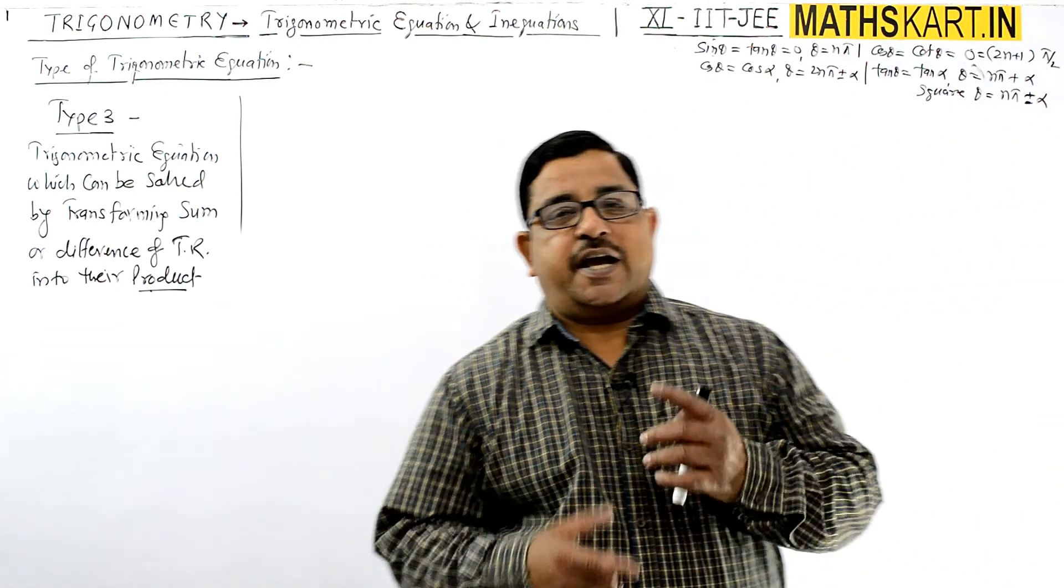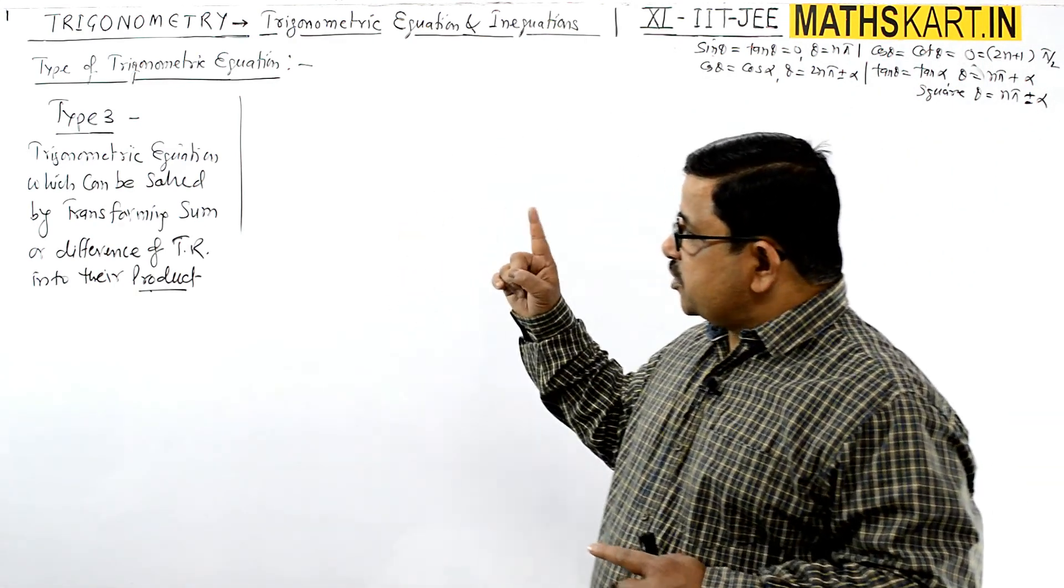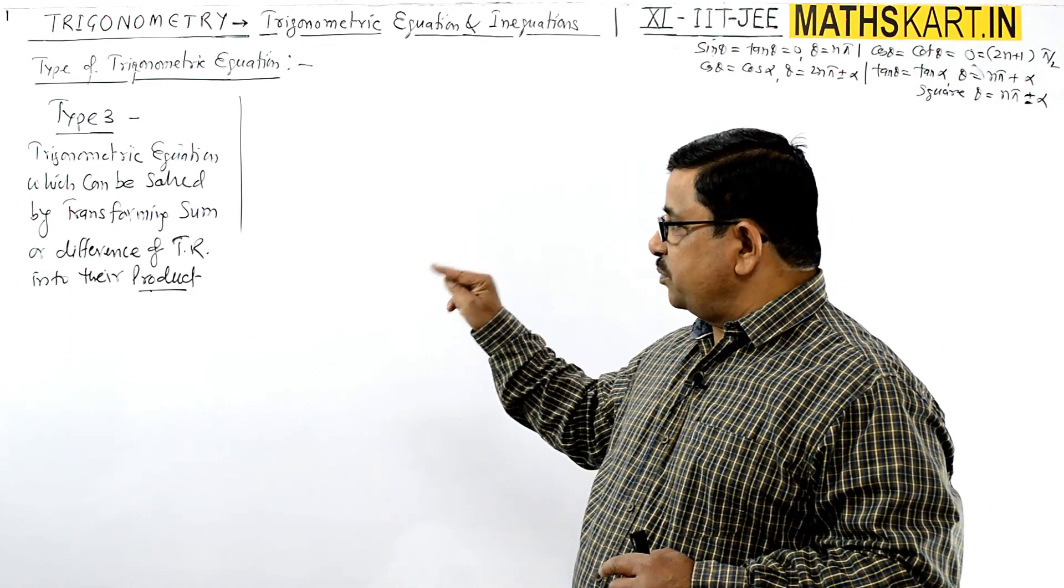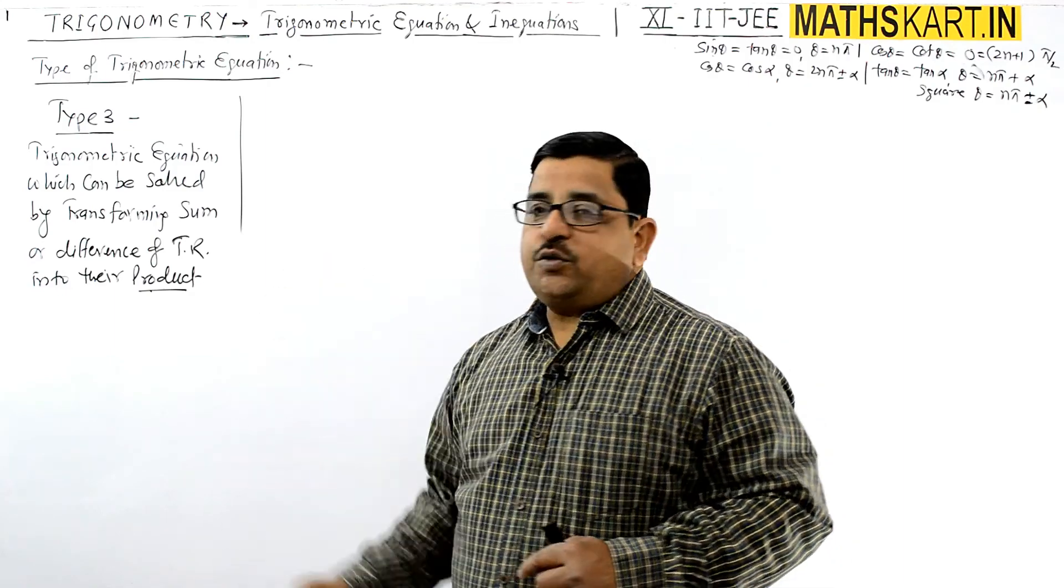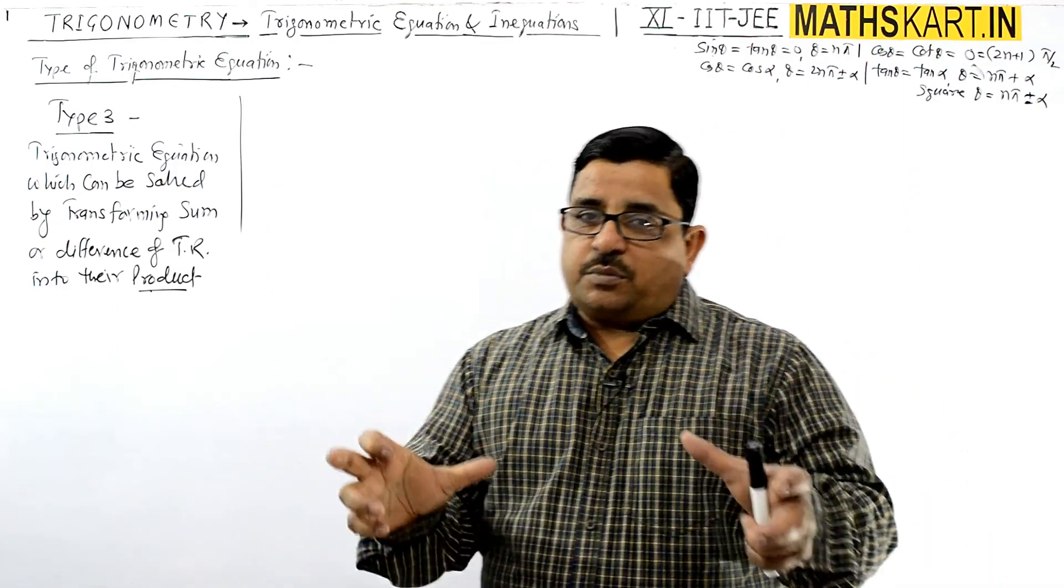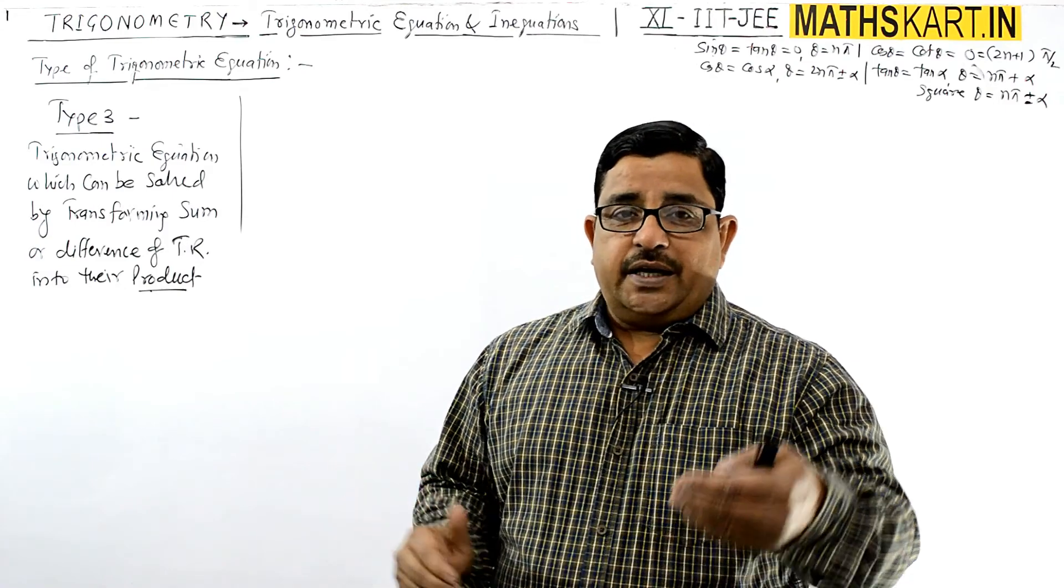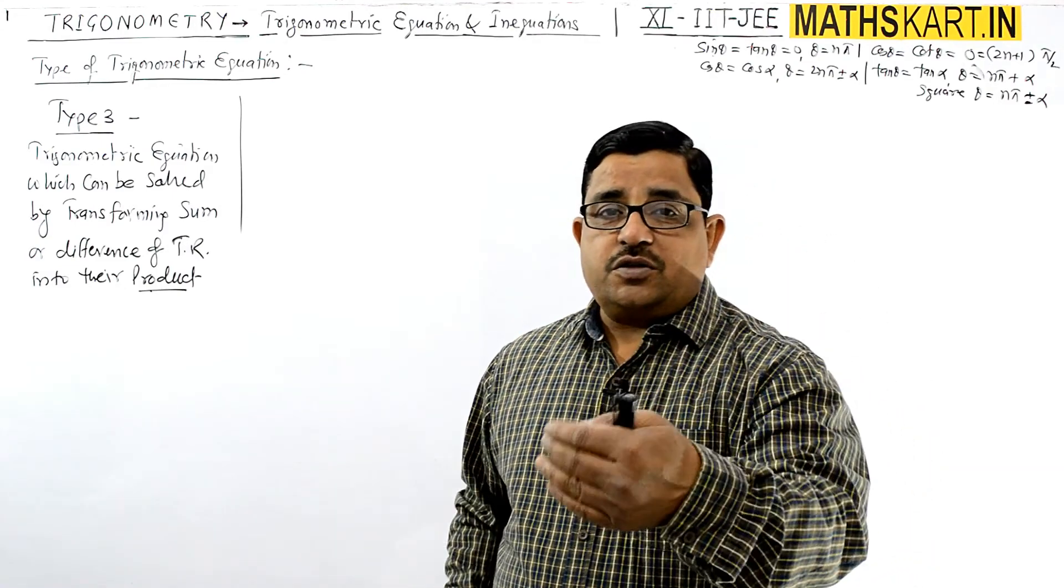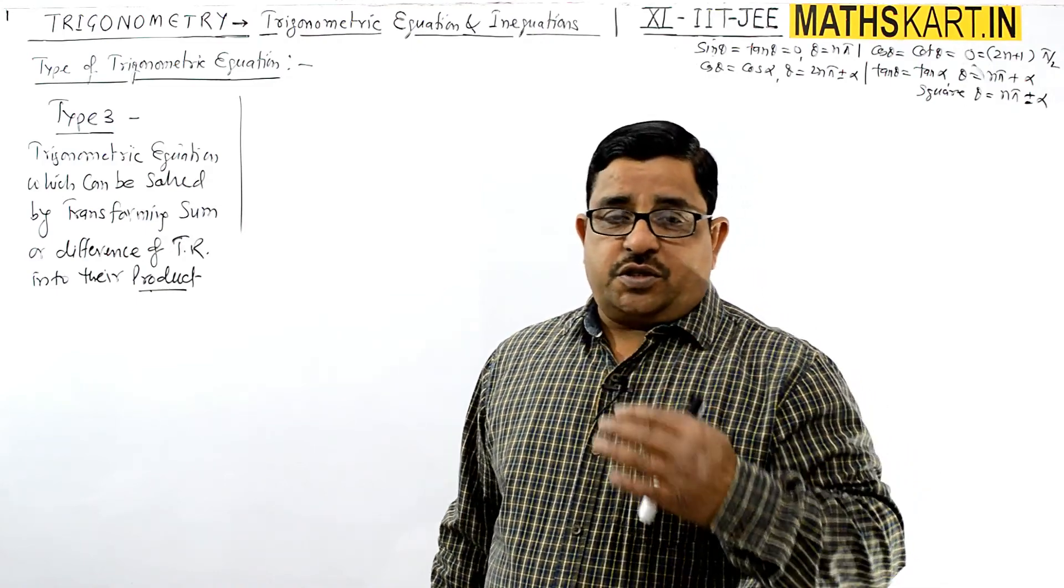Morning friends, next type of trigonometric equation which can be solved by transforming the sum or difference of trigonometric ratios into their product. The formulas are: sin C + sin D, sin C - sin D, cos C + cos D, and cos C - cos D.